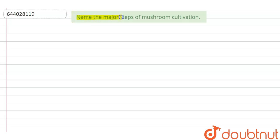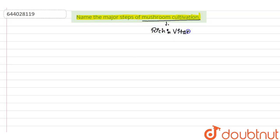The question is: name the major steps of mushroom cultivation. Mushrooms are rich in vitamin B, niacin, etc. They are very nutritious. There are basically five steps in mushroom cultivation.